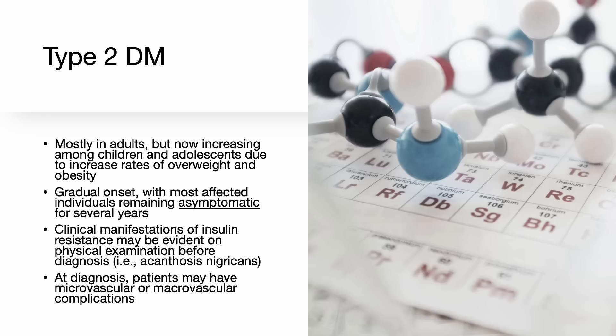Type 2 diabetes typically presents in adults, although the incidence is increasing among children and adolescents as the rates of obesity and overweight rise in these populations. Type 2 diabetes has a gradual onset with most affected individuals remaining asymptomatic for several years. Clinical manifestations of insulin resistance may be evident on physical examination before diagnosis, and at the time of diagnosis, patients may already have microvascular or macrovascular complications.